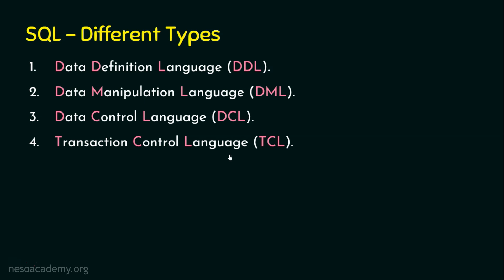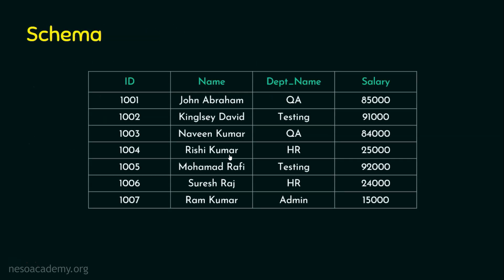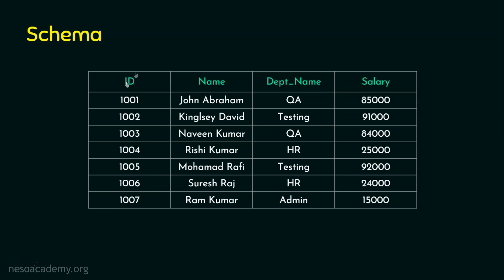Before we conclude, let's see how a table looks. The structure of a table is generally referred to as the schema. Here is an example schema with four columns: ID Number, Name, Department Name, and Salary. The ID column uses the Number data type, Name and Department Name use the Character data type, and Salary uses the Number type. The data rows — for example, ID 1001 for John Abraham in the Quality Assurance department — represent interrelated data stored using rows and columns.